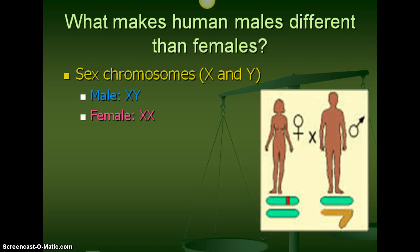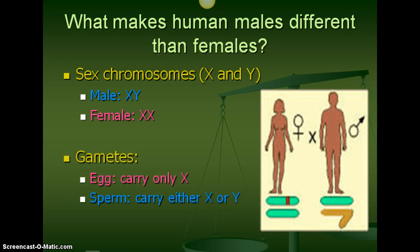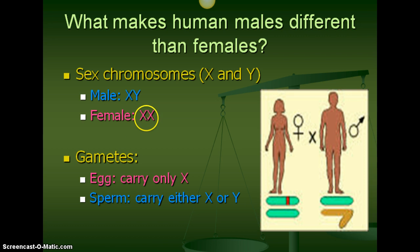In your notes packet, you have a place to fill that in. The eggs can only carry an X, and the sperm can carry either an X or a Y. The reason is because males have XY, so they have an X that gets passed on to one cell, and a Y that gets passed on to another cell. Females can only pass on the X chromosome. So the determination of the sex of a child is based on the male, not based on the female.